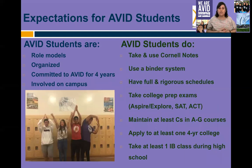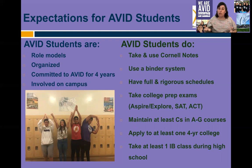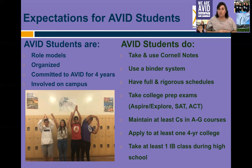Our expectations for AVID students are that they are role models, they're organized, they commit to AVID for four years, and they're involved on campus. AVID students are taking and using Cornell notes, using a binder system, and carrying full and rigorous schedules. They take college prep exams if required, maintain at least C's in their A-to-G courses, and apply to at least one four-year college. We also encourage students to take at least one IB class during high school, and we provide them the support to succeed in those courses.